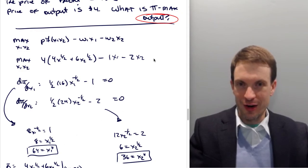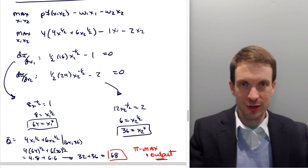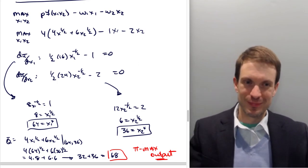To find our optimal output, we have to go back up to our production technology and plug in 64 here and 36 here. Here's our production technology evaluated at the optimal input bundle: 4 times 8 plus 6 times 6 is 32 and 36, or 68 is our profit-maximizing level of output. Very good.